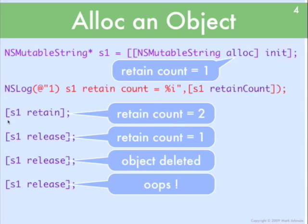Continuing through the example, let's say we then pass the retain message to S1. Retain increases the retain count by one — it was one, so now it'll be two. Then we pass release, and the retain count goes down by one, and now the retain count is one. Pass another release message, and the retain count goes to zero, so the object gets deleted from memory. If you pass the release message one more time, the object was already deleted, so that's going to cause the program to crash.